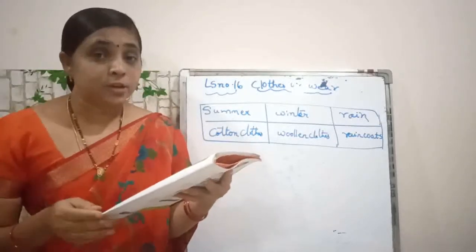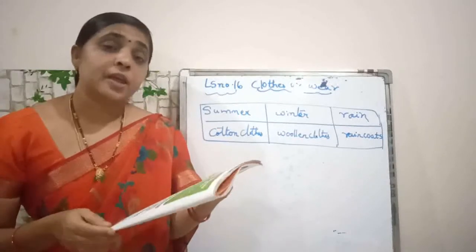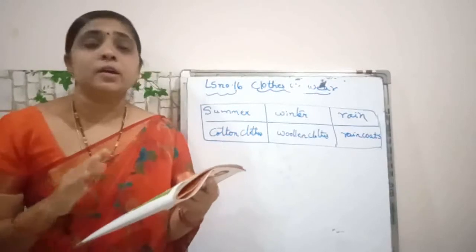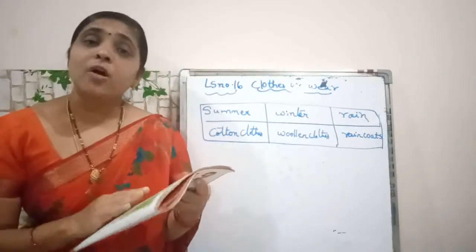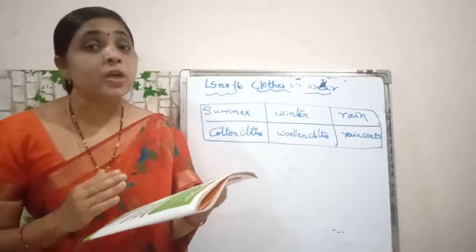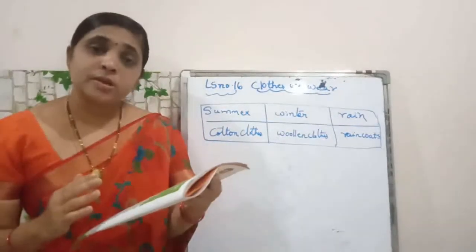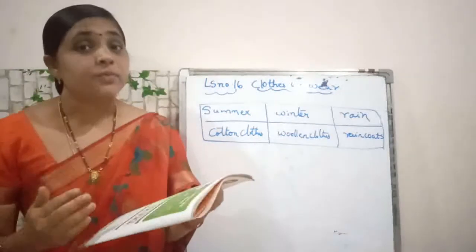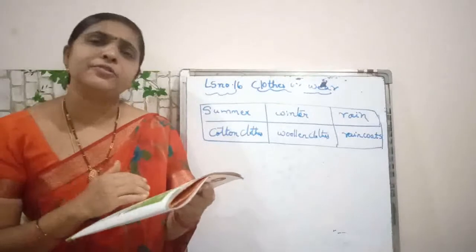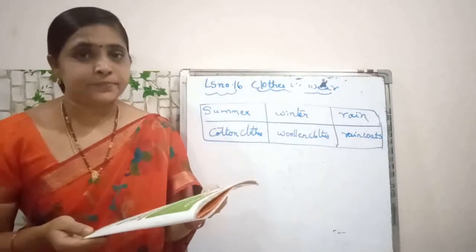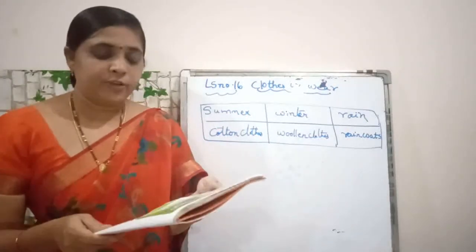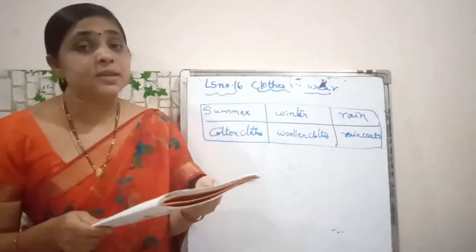What did you know up till now in this paragraph? There are different types of clothes we wear. All the clothes do not give the same feeling. Some clothes are rough, some are nice, some are smooth, some are silky. Different types of clothes have different types of feeling. The clothes we wear to different places and occasions differ.